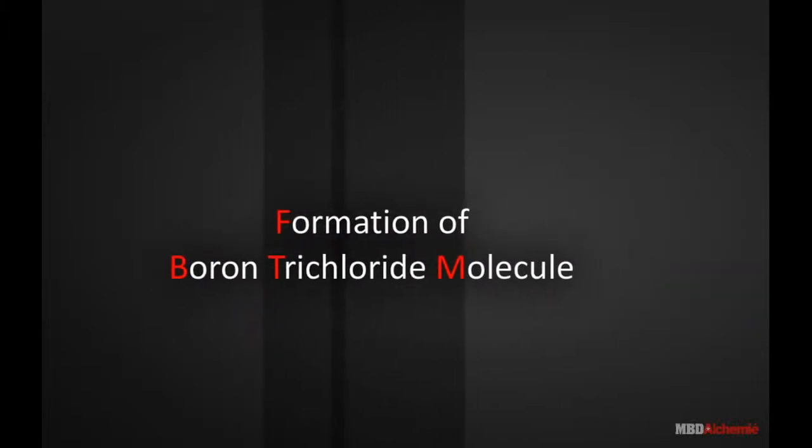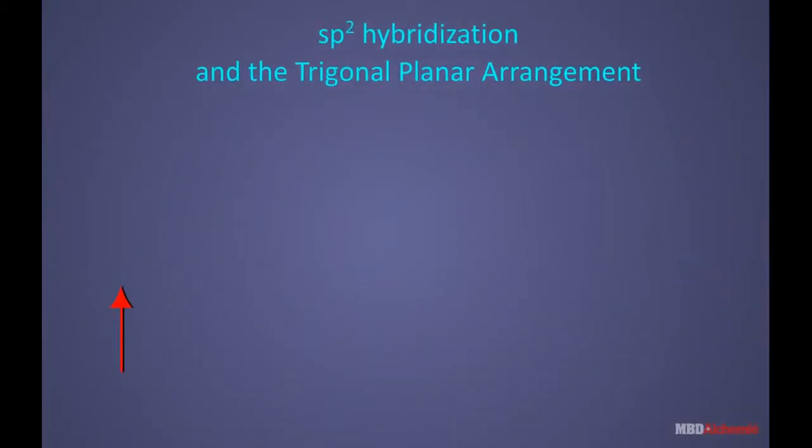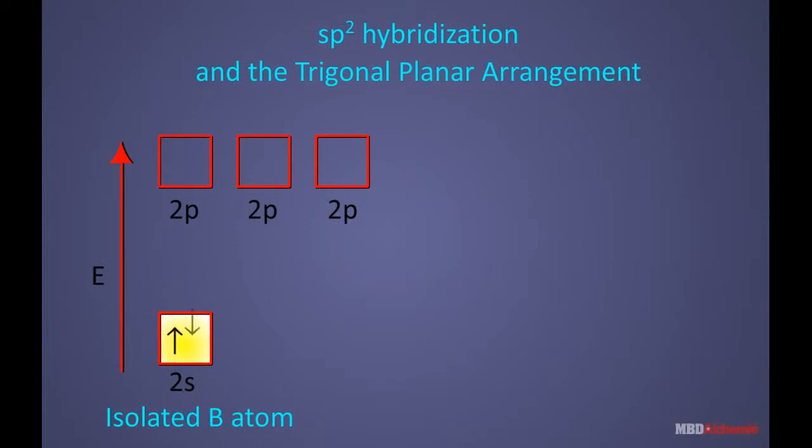Formation of boron trichloride molecule. In BCl3, the central boron atom has 1s2, 2s2, 2p1 electronic configuration.